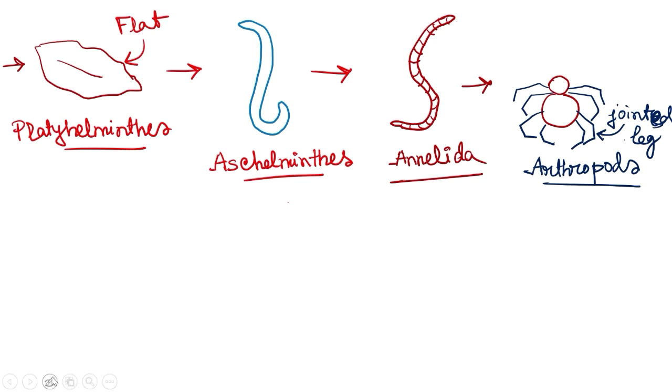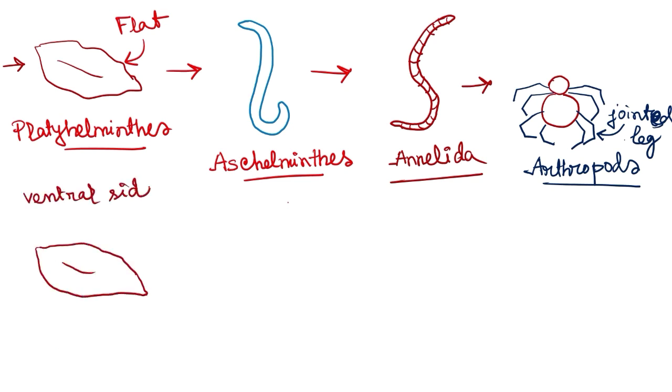Platyhelminthes also have the blind sac type of digestive system, with one opening for both anus and mouth. However, the digestive system of platyhelminthes is not well developed because most platyhelminthes are parasites. They directly absorb digested food from the host, so they do not need a very developed digestive system of their own.